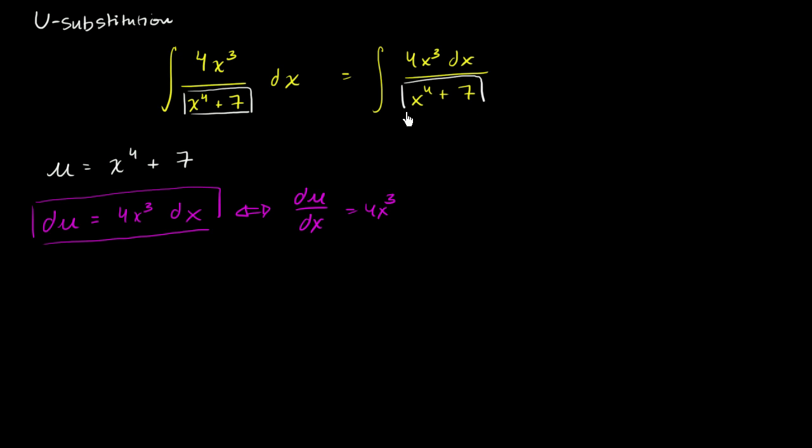u, which we set to be equal to x to the fourth plus 7. And then du is equal to this. It's equal to 4x to the third dx. We saw it right over here.